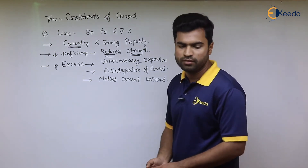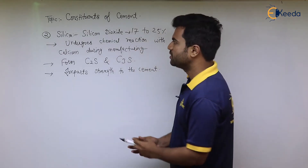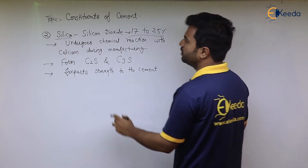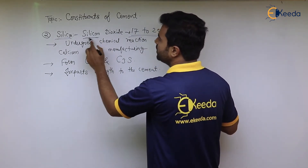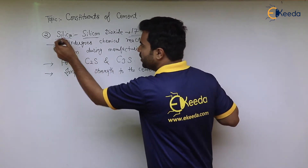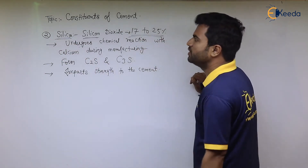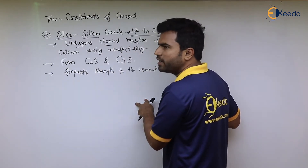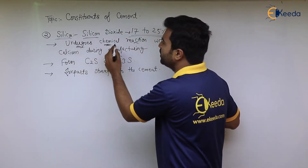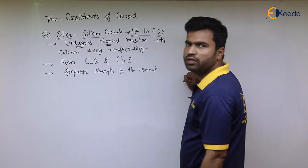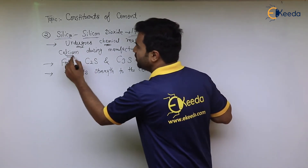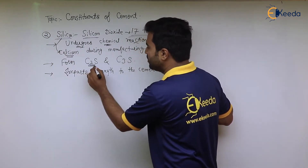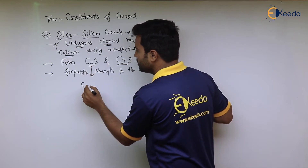The next constituent is silica. The percentage of silica in cement is 17 to 25 percent, and it can also be called silicon dioxide (SiO₂). The function of silica is that it undergoes a chemical reaction during the manufacturing process — it reacts with calcium to form dicalcium silicate and tricalcium silicate.